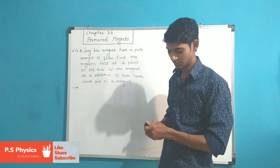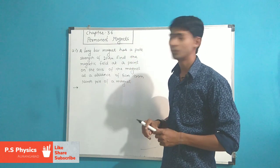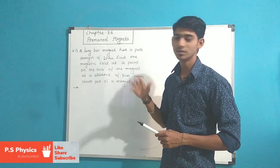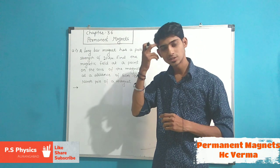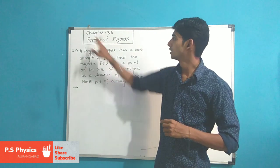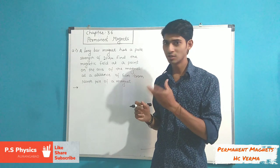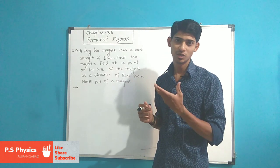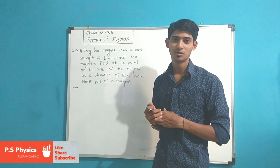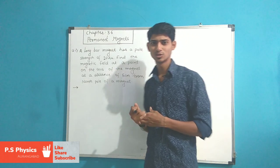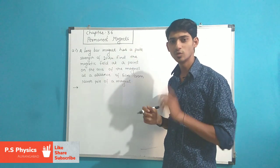Welcome guys, welcome to our channel PS Physics. Last lecture we solved exercise questions from the book H.C. Varma and the topic was the magnetic properties of matter. Now from this video, from this lecture, we will start solving exercise questions from the next topic — that is Chapter 36 from H.C. Varma — and the name of the topic is Permanent Magnets. The syllabus includes torque of the magnet, magnetic induction on the axis and equator, Earth's magnetic field, magnetic potential, and more.